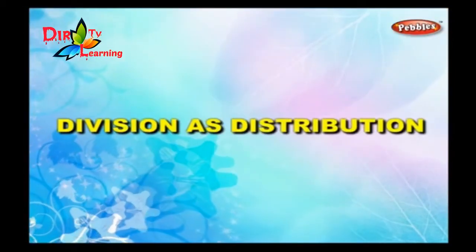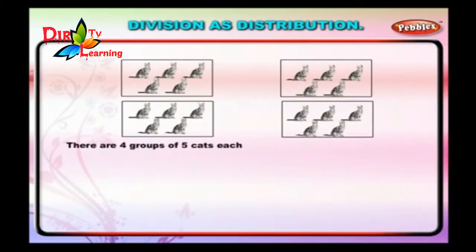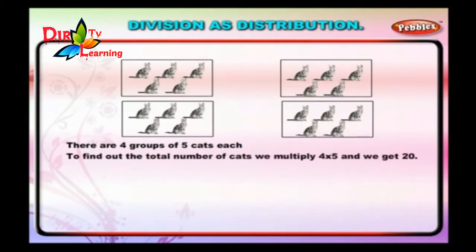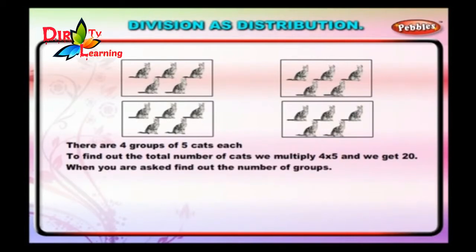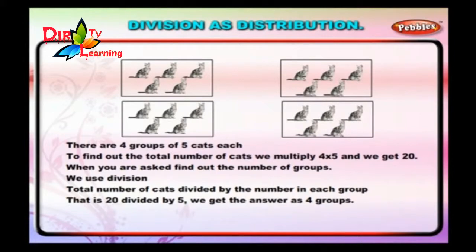Division as Distribution. There are 4 groups of 5 cats each. To find out the total number of cats, we multiply 4 into 5 and we get 20. When you are asked to find out the number of groups, we use division. Total number of cats divided by the number in each group. That is, 20 divided by 5, we get the answer as 4 groups.